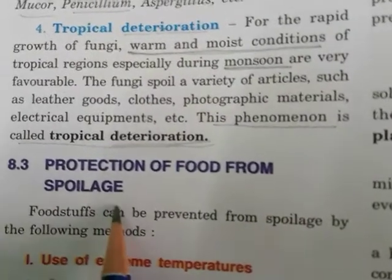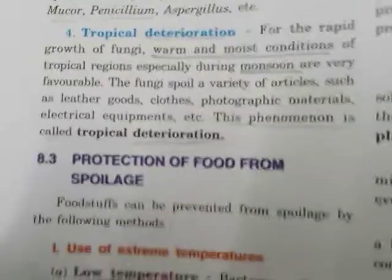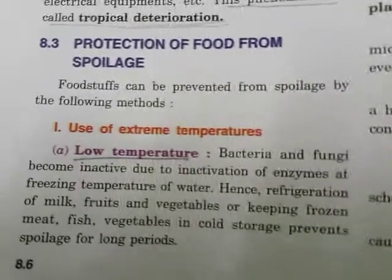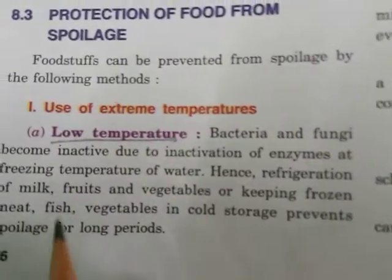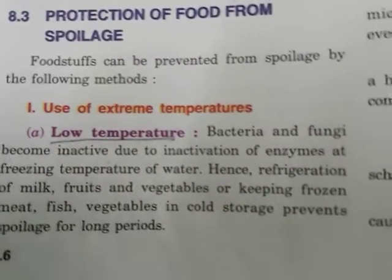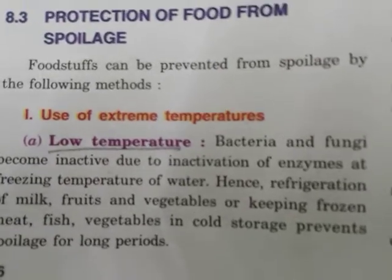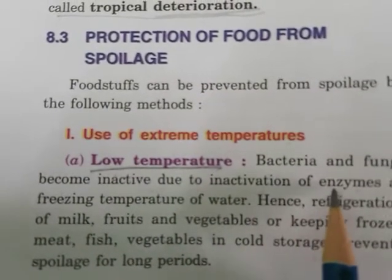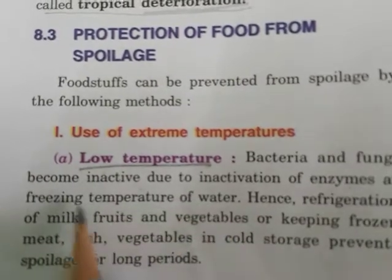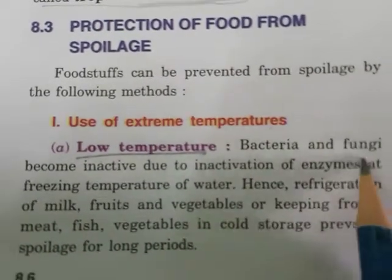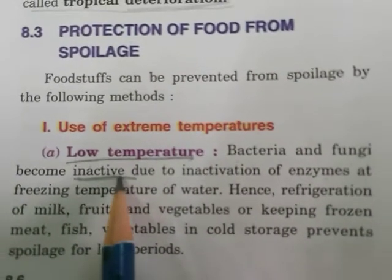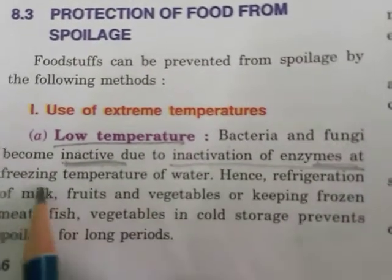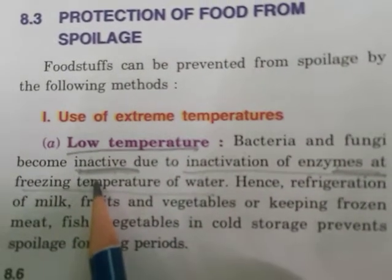Now we will see protection of food from spoilage. Foodstuffs can be prevented from spoilage by the following methods. First is use of extreme temperatures - both extreme low and high. At low temperatures, bacteria and fungi become inactive due to inactivation of enzymes at freezing temperatures of water. At low temperatures, these bacteria and fungi become inactive because their enzymes are inactivated.